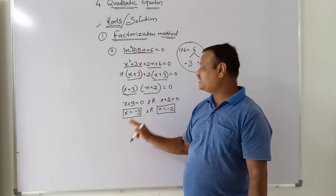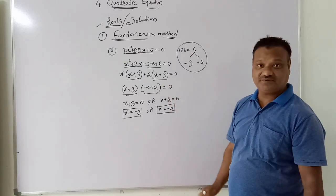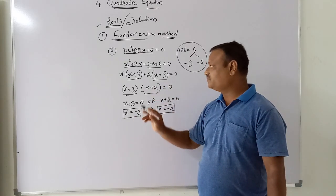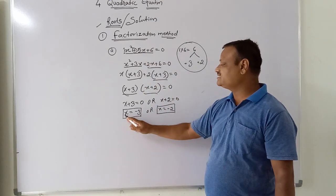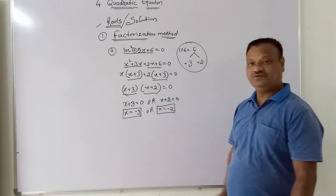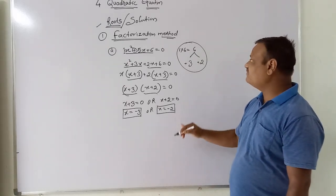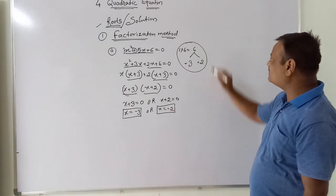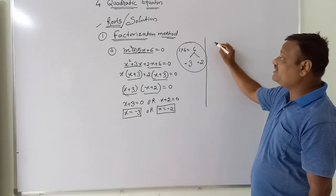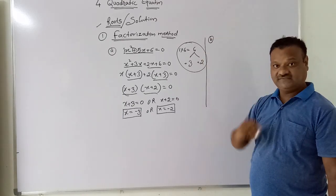So we get two roots of this quadratic equation: x = -3 and x = -2. By using the same approach we consider one more example, but only the sign is different.